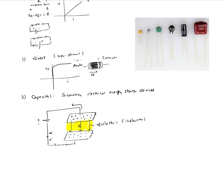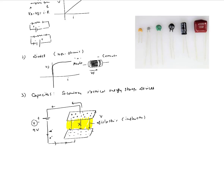After a while, the two plates will be saturated with charge, and then the current in the external circuit is going to stop flowing. This happens until the voltage across the plates equals the voltage of the battery. So if this is a nine-volt battery, after a certain time period when the plates are fully saturated, the voltage difference across the two plates will also equal nine volts. At this point, we say the capacitor is fully charged.